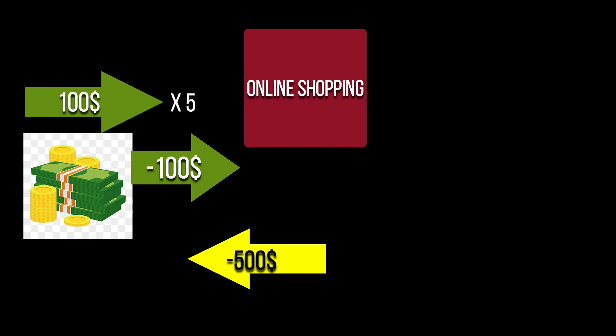But before payment, if an attacker successfully changes the quantity value to a negative value — like minus 100 — then five products would become minus 500.